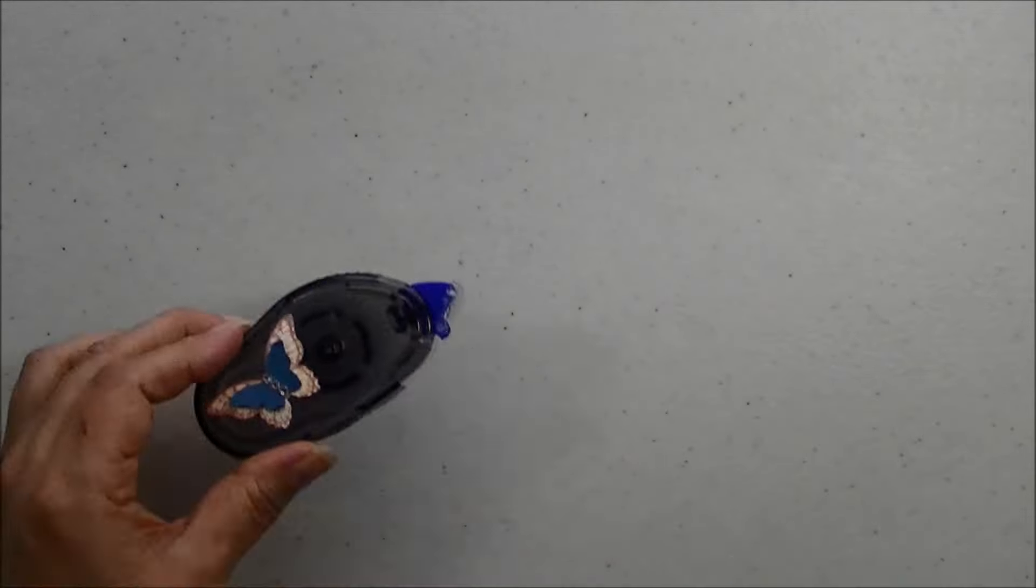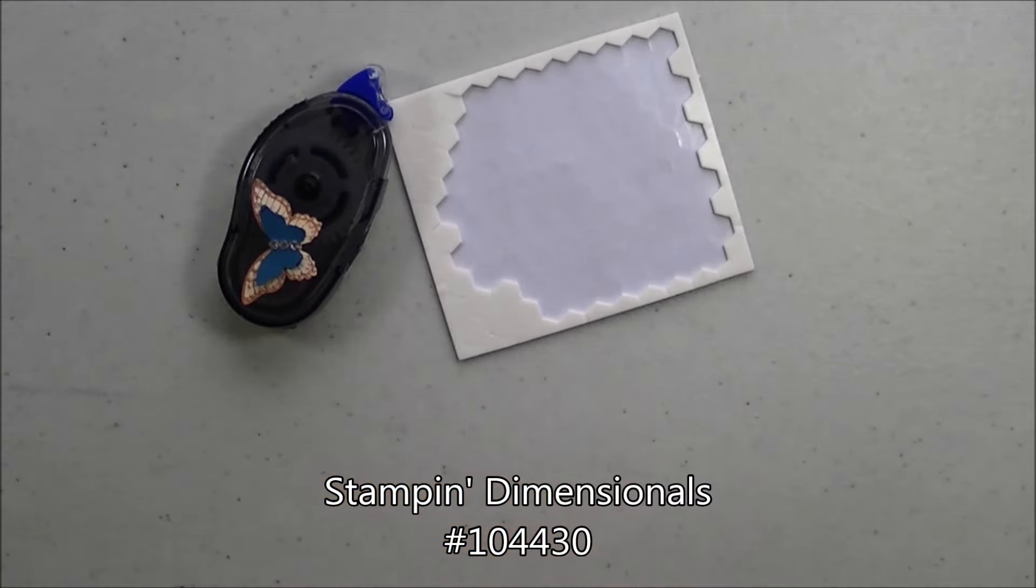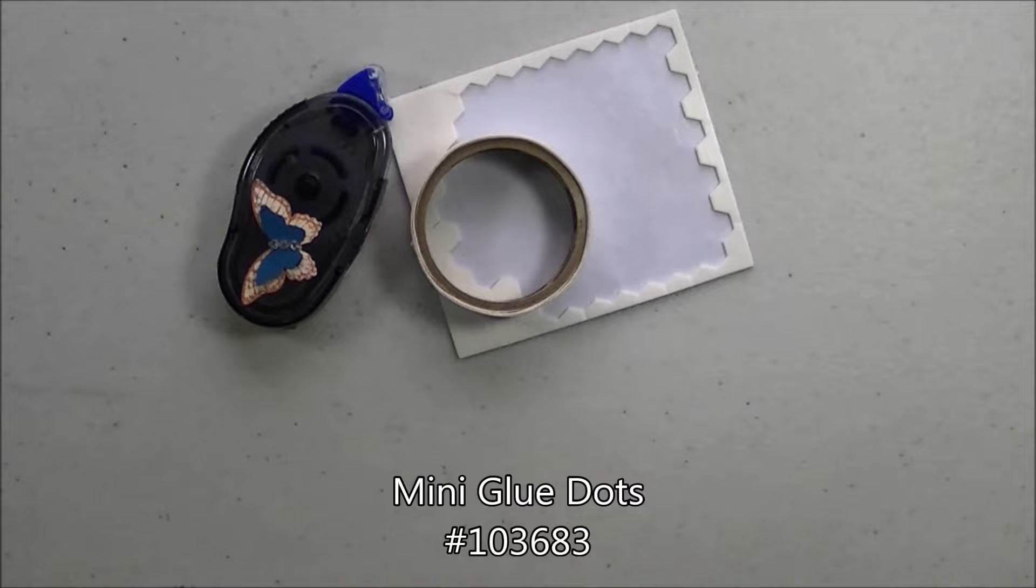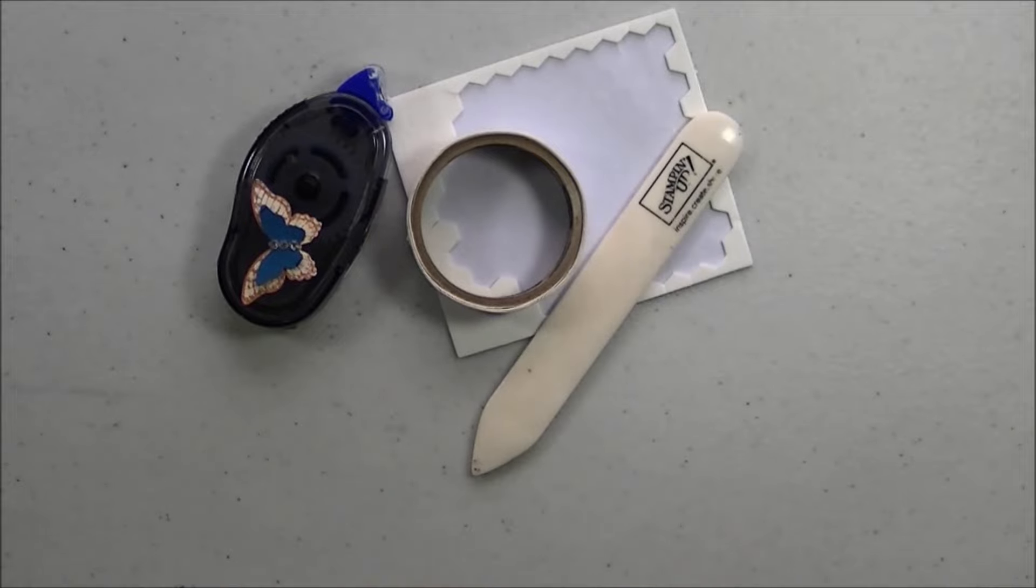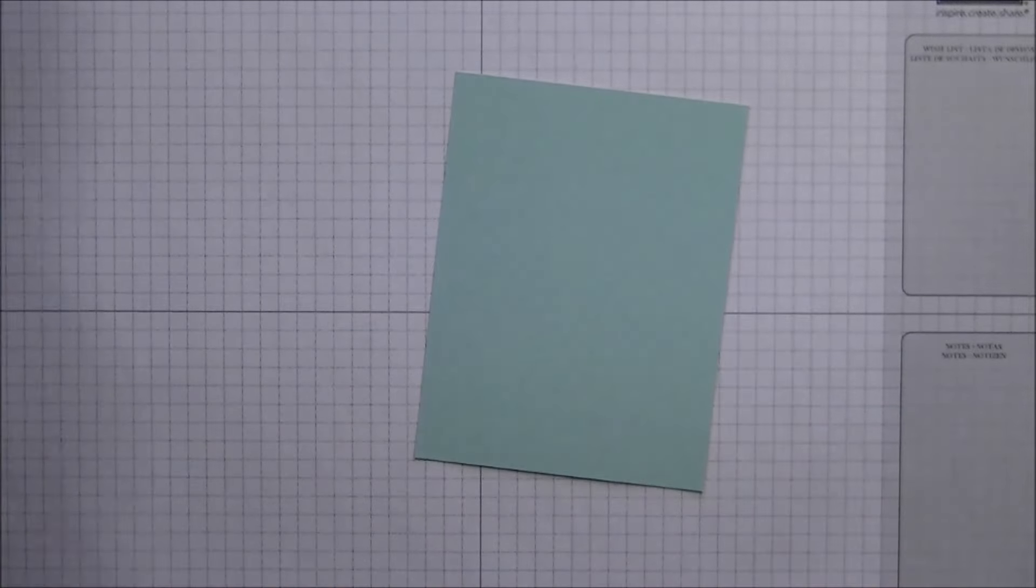And then I have a scrap piece of Whisper White for a butterfly. The other things that I'm using today are my Snail Adhesive, some Dimensionals, glue dots, and a Bone Folder. Okay so let's go ahead and get started. I'm going to go ahead and lay my grid sheet down to protect my work surface.